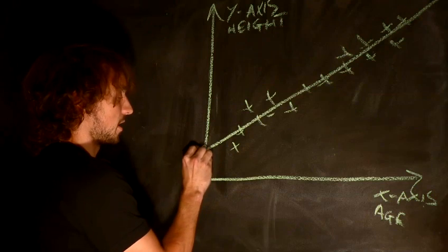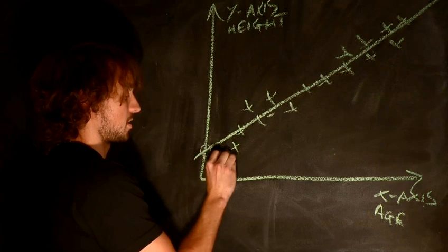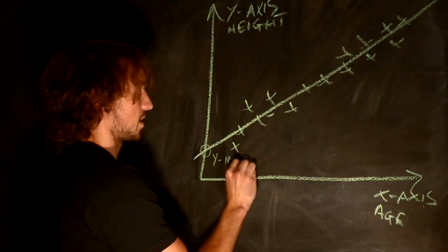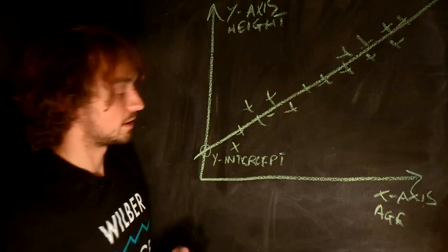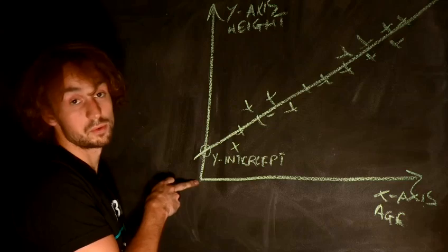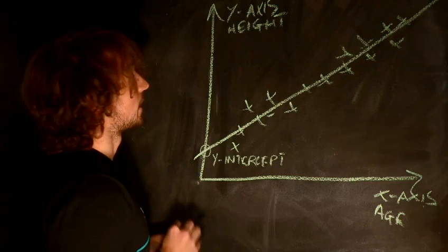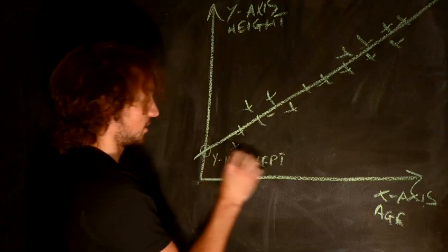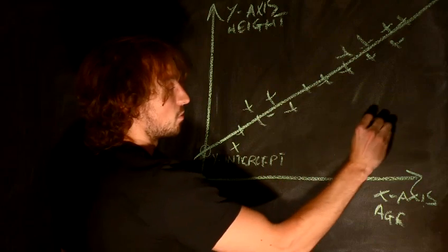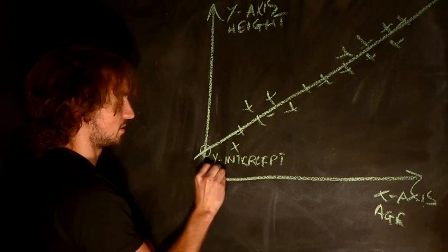Now, this point here is called the y-intercept. It's where it crosses the y-axis and it's roughly the height of a child that has just been born. In this case, I'm going to say this y-intercept is 40. So when x is 0, y is 40. This point here is 40.